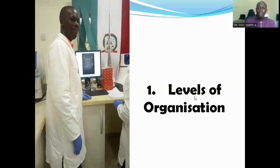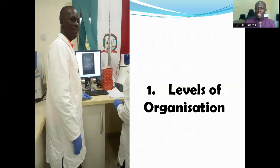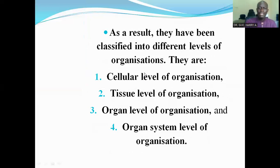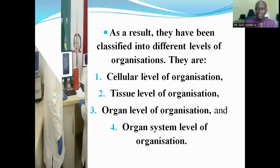All members of the Kingdom Animalia are multicellular. All of them do not exhibit the same pattern of organization of cells. As a result, they have been classified into different levels of organization. The levels of organization are: cellular level of organization, tissue level of organization, organ level of organization, and the organ system level of organization.